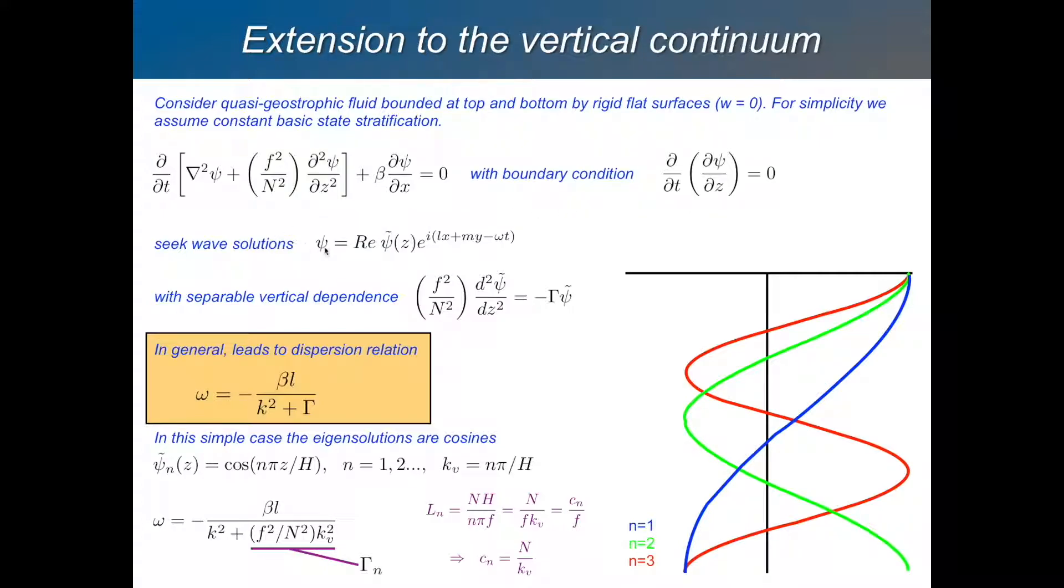And we will look for wave solutions now, again, with this complex exponential. But now we have to acknowledge that our coefficients might be dependent on the vertical. So before we had two modes, because we had two layers. Now we've got something vertically continuous. So we have functions of z.